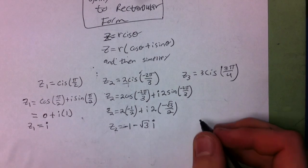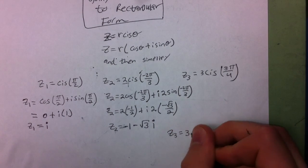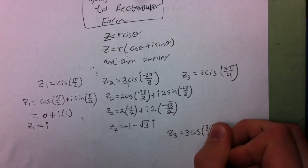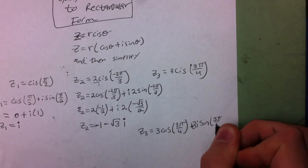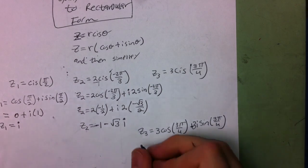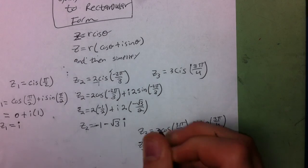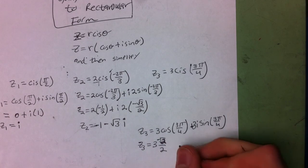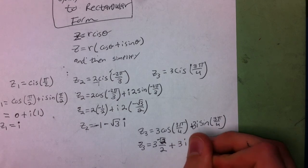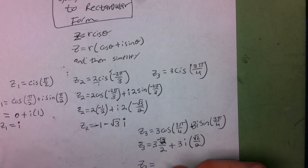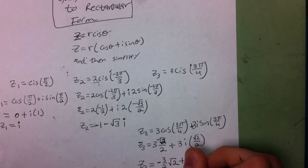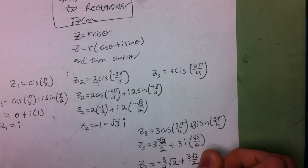Finally, for z₃, z₃ equals 3*cos(3π/4) plus 3i*sin(3π/4). So that means we have z₃ equals 3 times negative √2 over 2 plus 3i times √2 over 2, which gives z₃ equals negative 3/2*√2 plus 3√2/2*i.